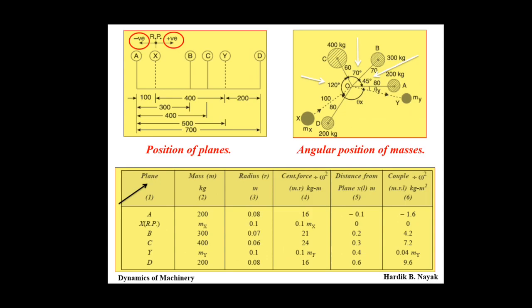If the balancing mass revolve at the radius of 100 mm, that value is RX and RY, that is 100 mm. Our goal is find their magnitude and angular positions. Firstly, as per given data, first draw position of plane. In this figure you can see there are the four plane, main plane A, B, C and D. Then balancing plane X and Y.